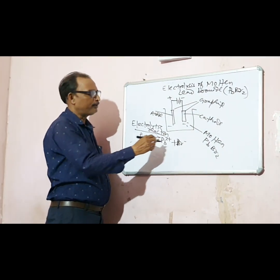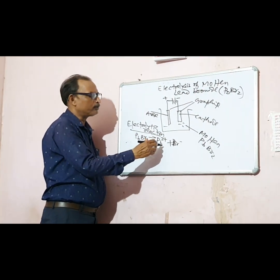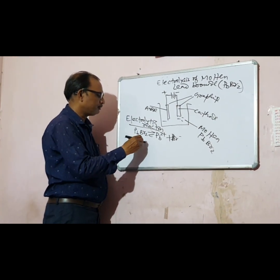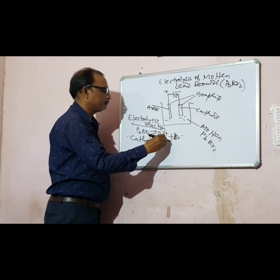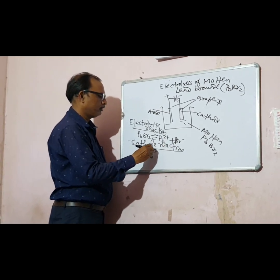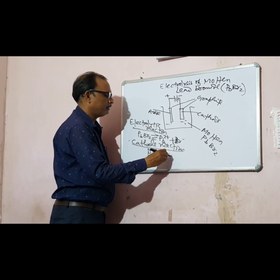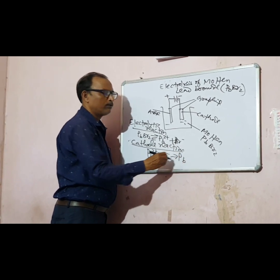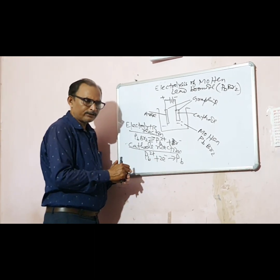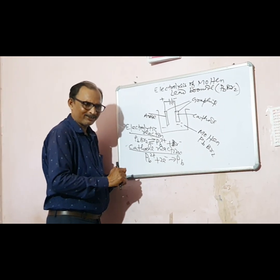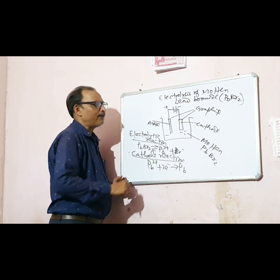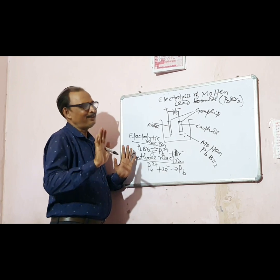Pb2+ will migrate to the cathode. Cathode reaction: Pb2+ + 2e- gives rise to Pb. In exam questions like this — what is the cathode reaction, what is the product at cathode — we can say lead metal will be deposited at the cathode.